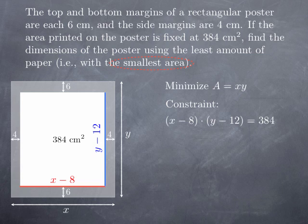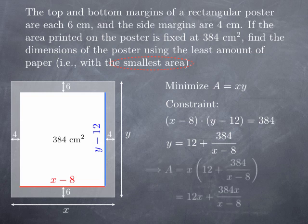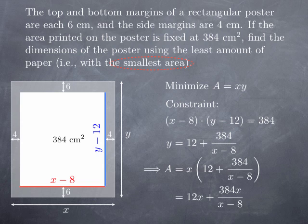So now we have to minimize the function A that is XY under a certain constraint. The objective function A is here given as a function of two variables. As usual, we're first going to use the constraint to transform this function into a function of one variable. So to do that, we're going to solve for instance for Y in the constraint. So if I divide both sides by (X - 8) and then add 12 to both sides, I find that Y is 12 plus 384 divided by (X - 8). And I can substitute for this value of Y in A. So A is X multiplied by this quantity. In other words, 12X plus 384X over (X - 8). Now I have found my objective function A that I want to minimize as a function of one variable.